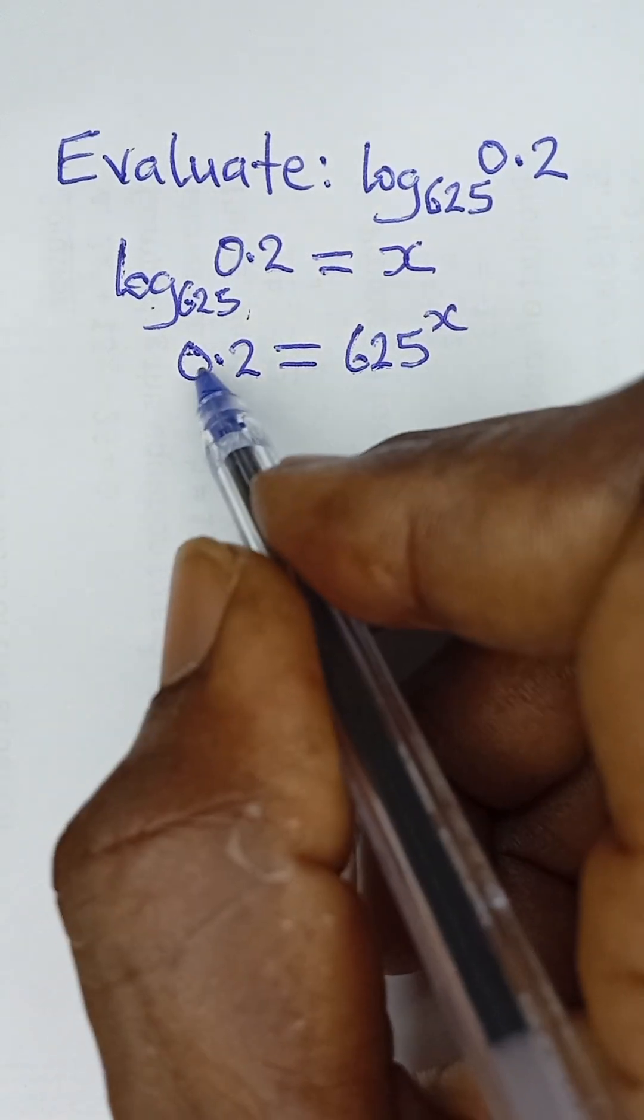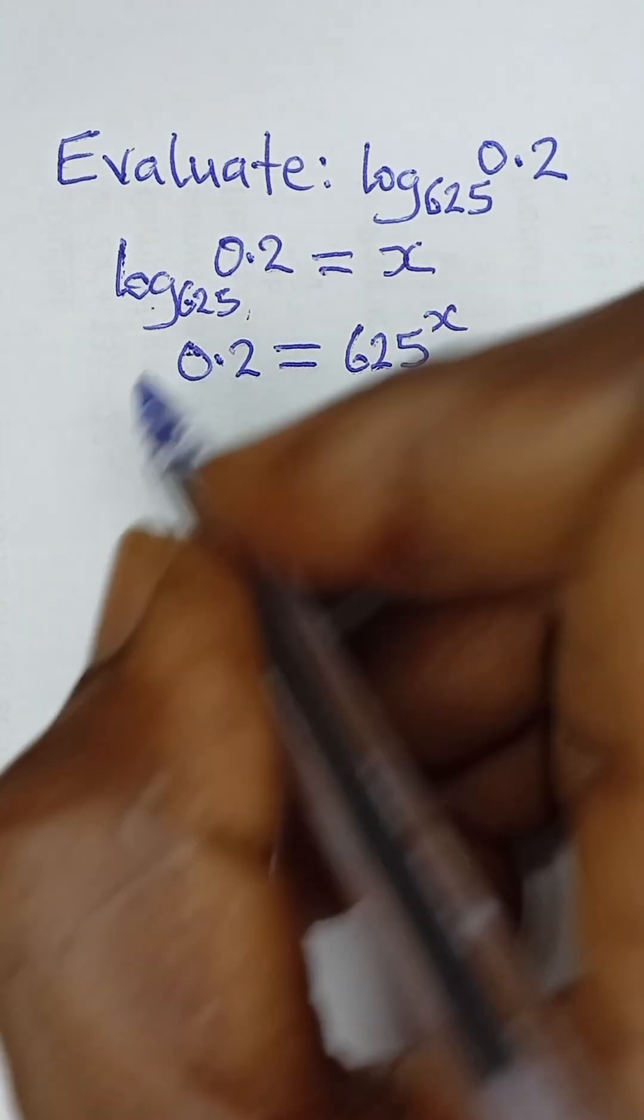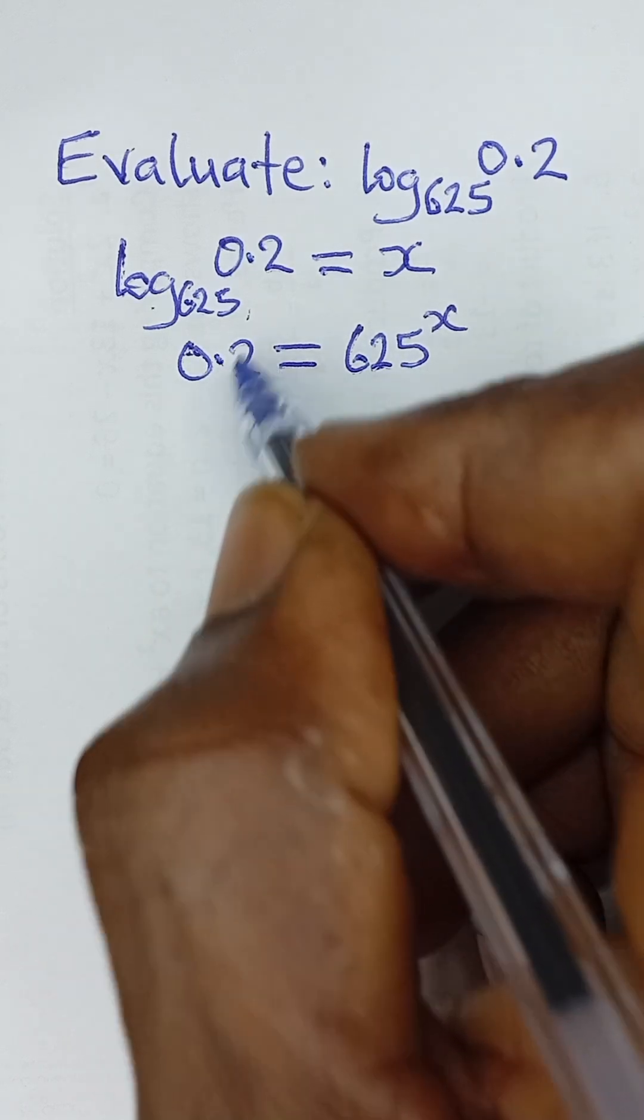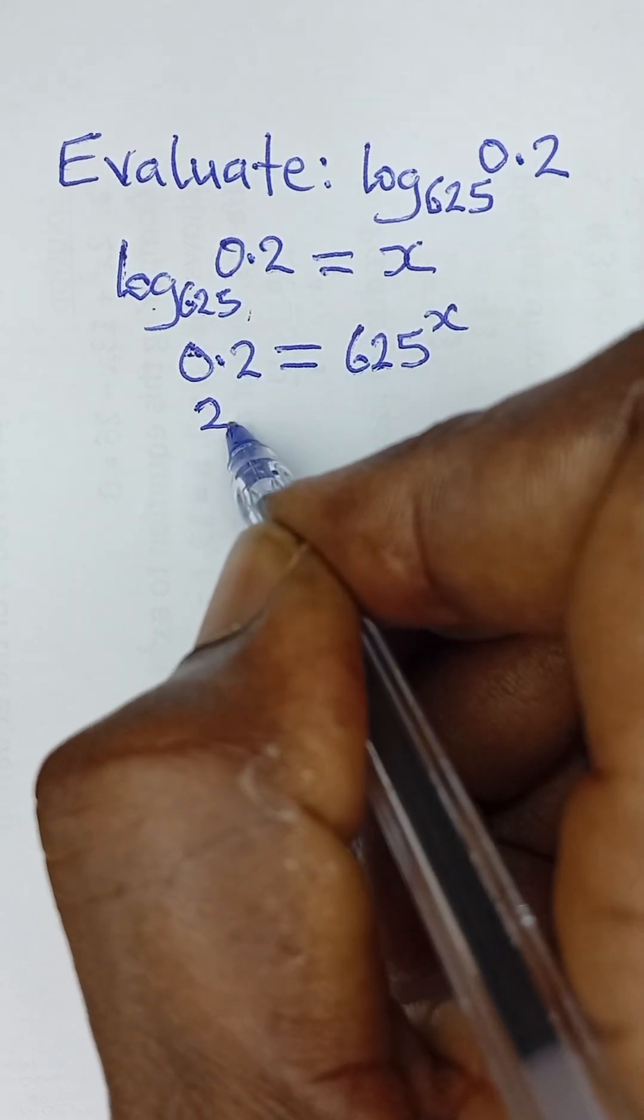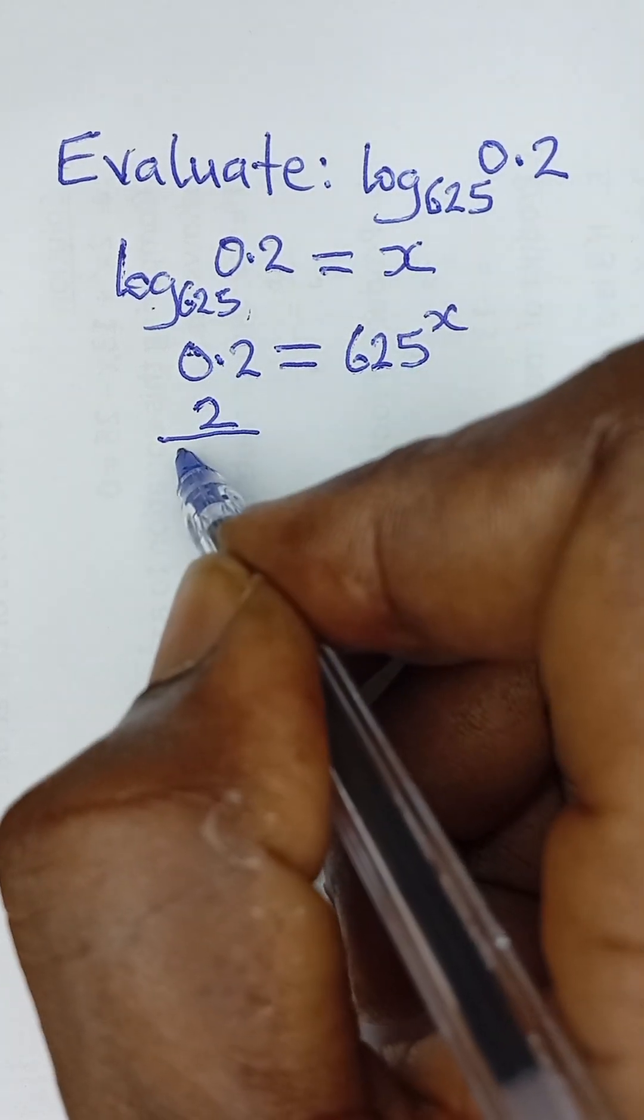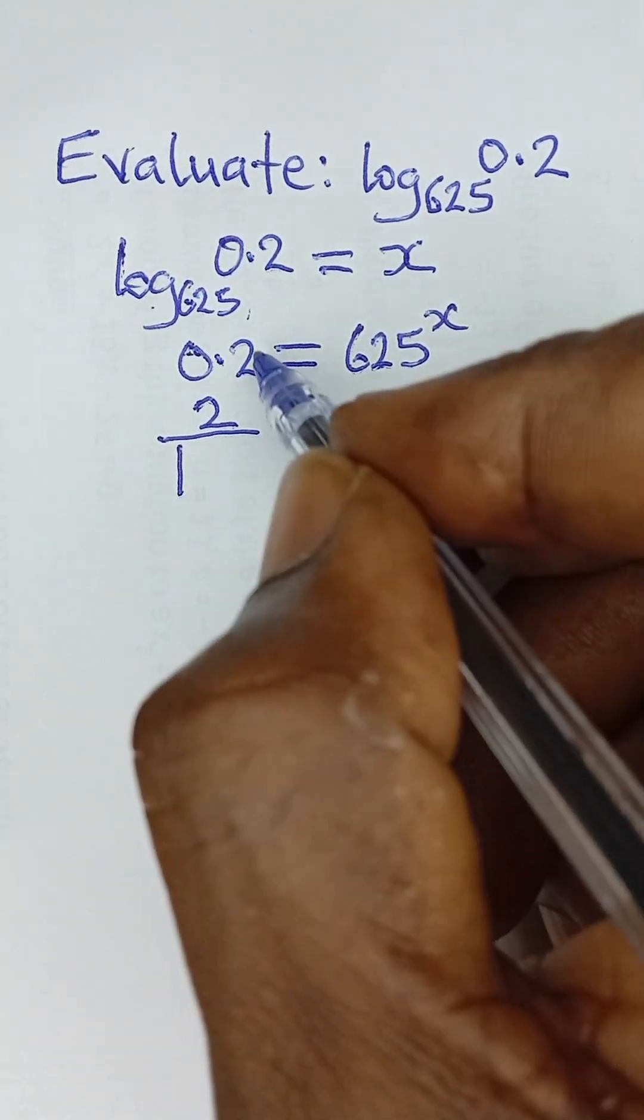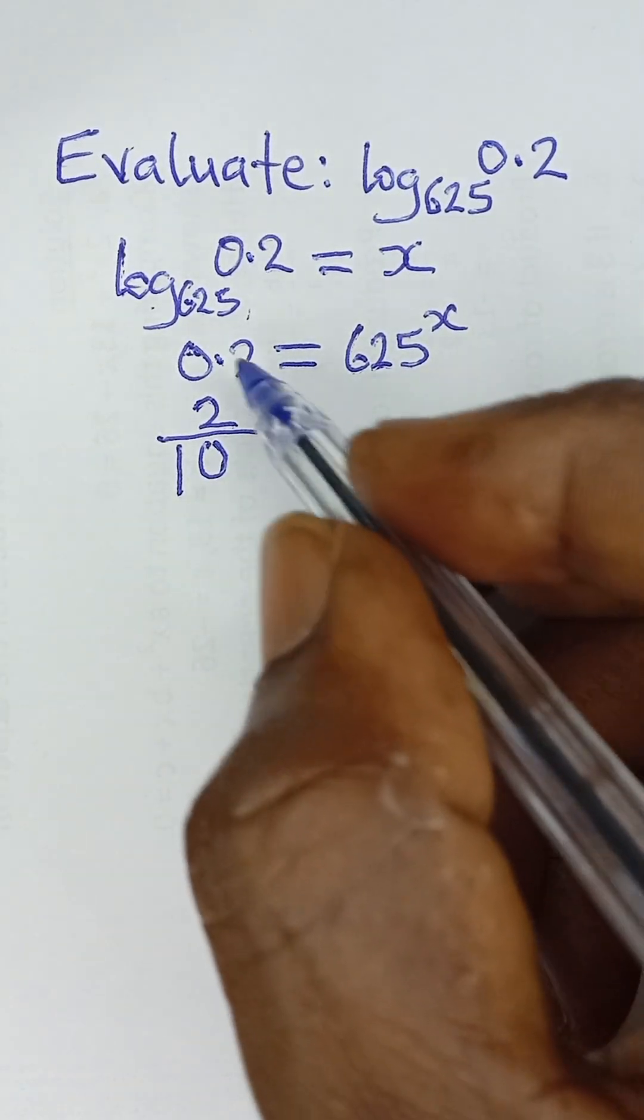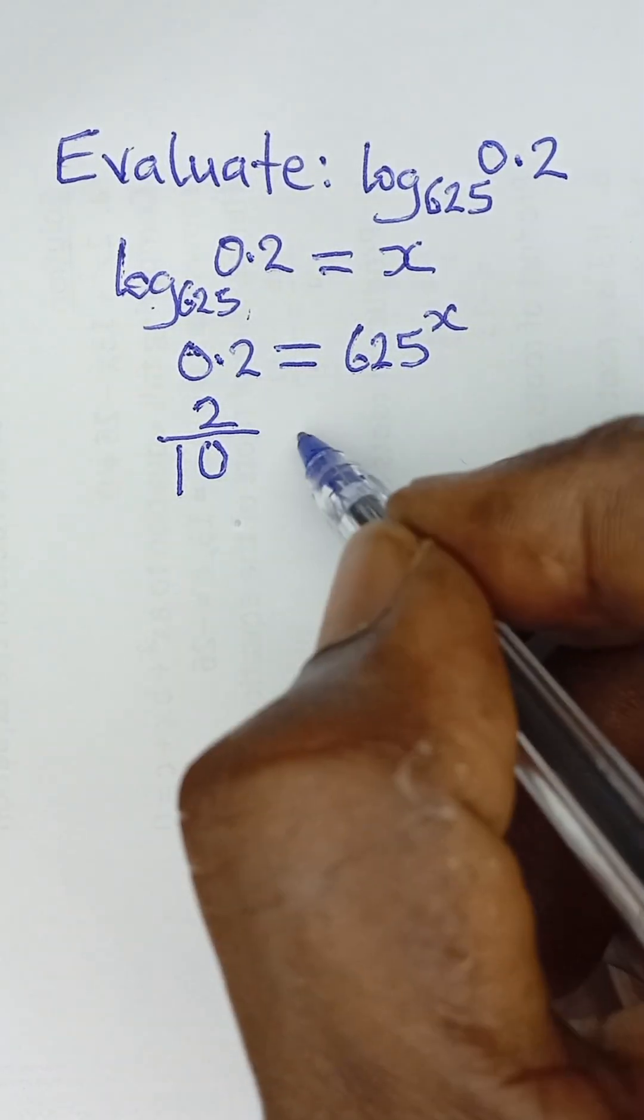Now this 0.2 can be expressed in fraction. Don't forget 0.2, you simply take this 2. In order to express it in fraction, you take this 2 and then you say all over this decimal point becomes 1, and then this 2 here you take it as zero. So that is how to convert from decimal to fraction.